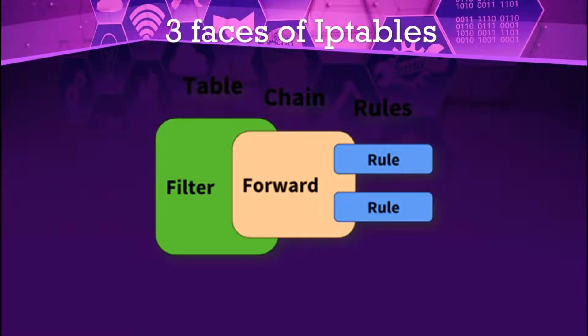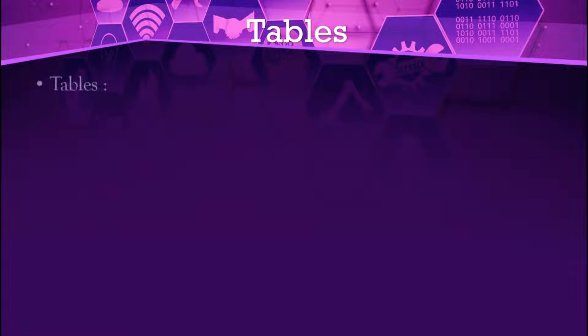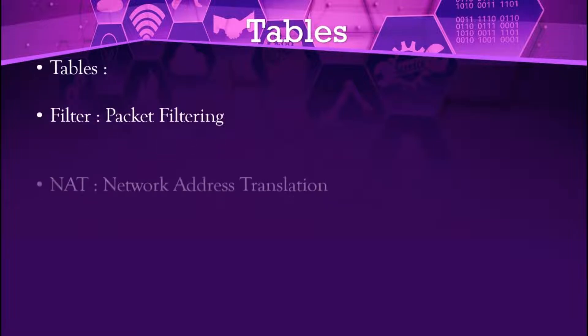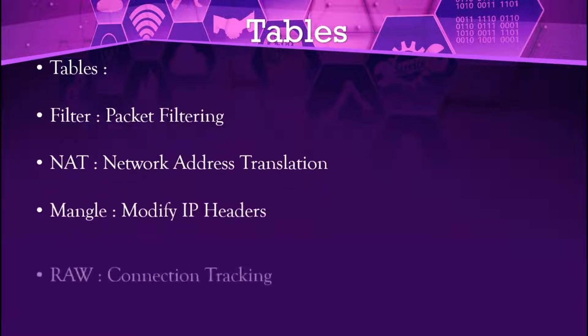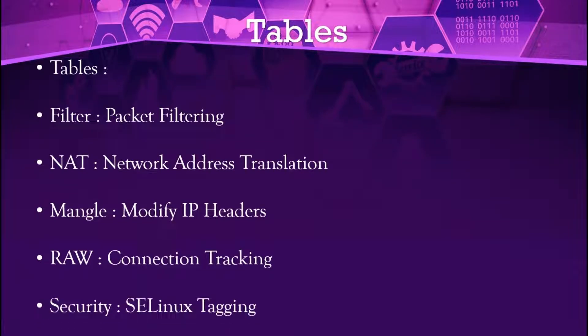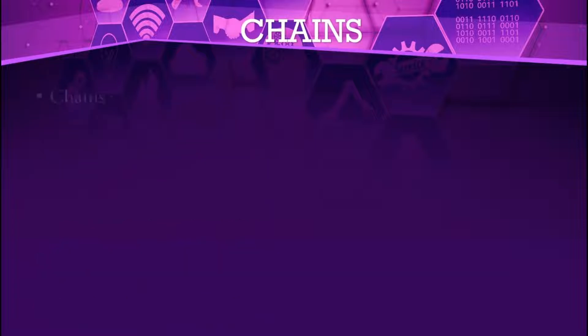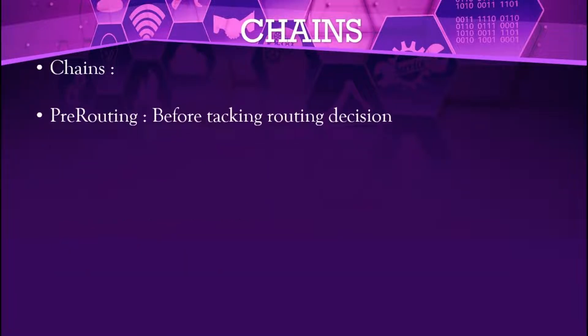There are three phases of iptables: table, chain, and rules. Tables include filter, NAT, mangle, raw, and security. Filter will filter the packages. NAT will route your network. Mangle is a combination of filter and NAT. Raw is a connection tracking tool, and security means SELinux tagging.